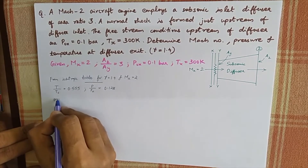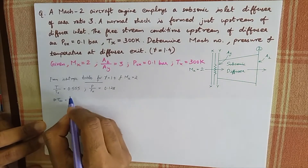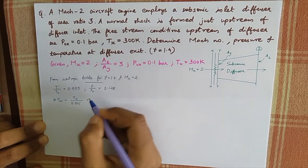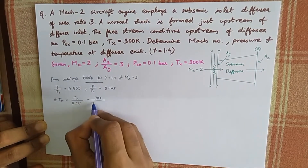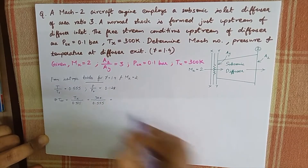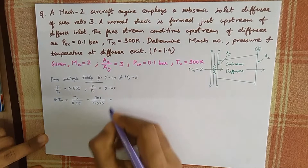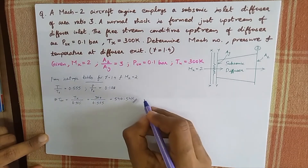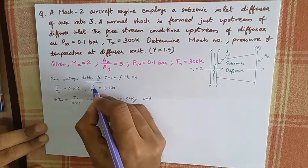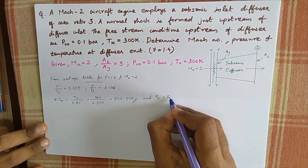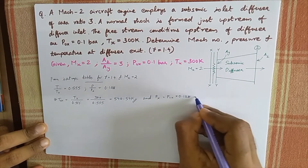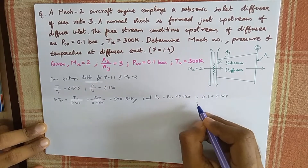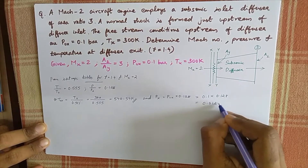Using T by T0 equals 0.555, T0x is equal to Tx divided by 0.555, which gives T0x equal to 540.54 Kelvin. Similarly, using P by P0 equals 0.128, P0x is equal to 0.1 bar divided by 0.128.